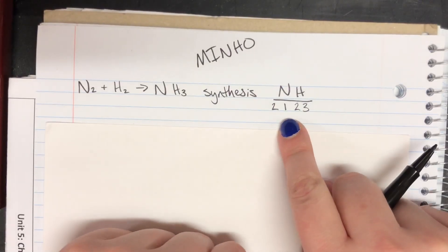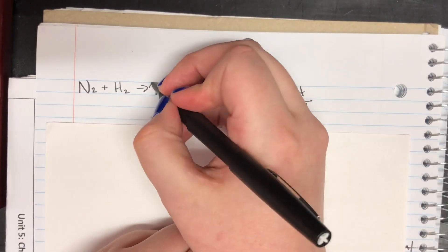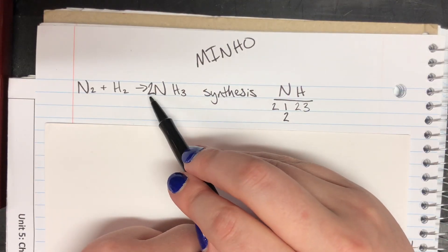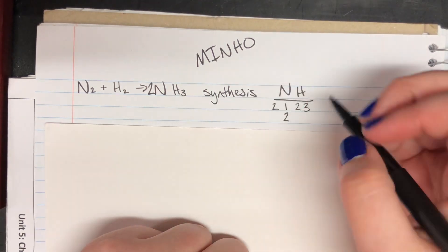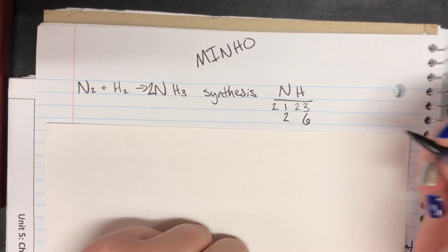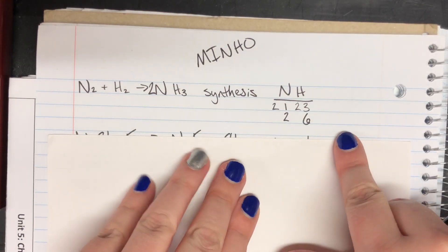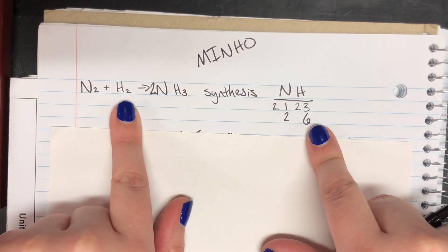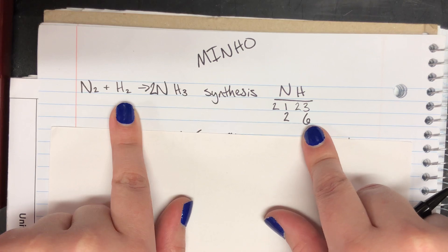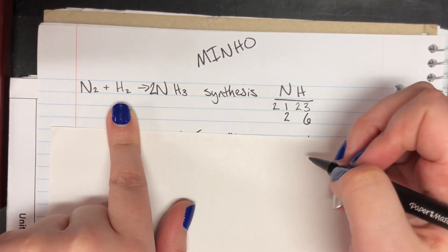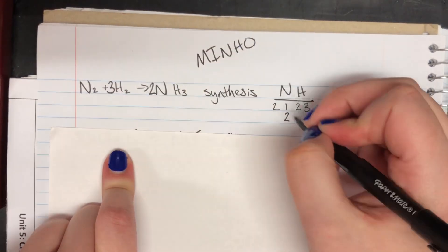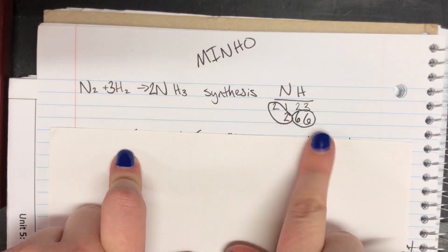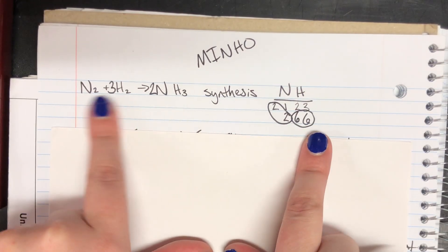I'm going to see what I can multiply one by to get two — well, two. So I'll put that two coefficient there and recount. This not only affected my nitrogen count, it also affected my hydrogen count. Two times three gives me six. Now I can try to fix my hydrogen on the left-hand side. Two times three will give me six, and that gives me my balanced equation with the correct counts and coefficients.